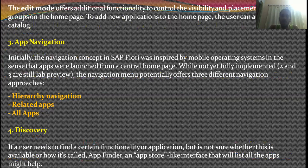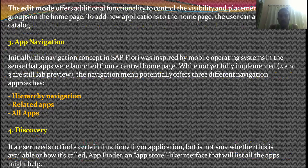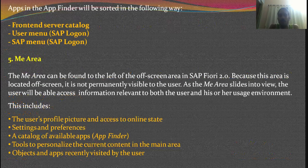The next point is discovery. You have something called an app finder, like on your mobile phone. This lists the applications you are looking for — you just enter a keyword. For example, if you are looking for a purchase order application, you search for 'purchase' and it will find it. If you are not sure and you search 'order', it will give you a list of all applications available with that name, such as purchase order, sales order, and so on.